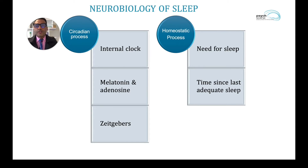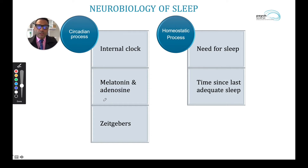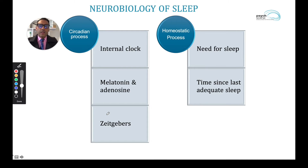There are two key processes involved in the neurobiology of sleep. One is the circadian process, and two, the homeostatic process. The circadian process is linked to the internal clock, which is present in all cells of the body. We have the hormone melatonin and the neuropeptide adenosine that are sleep-promoting. The circadian rhythm is very closely linked to what we call Zeitgebers, which is a German term for time-givers. These time-givers are sensitive to our routines.